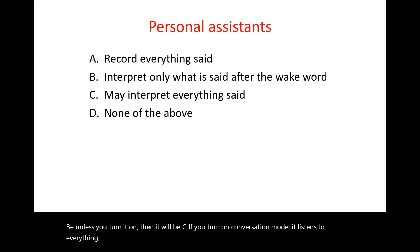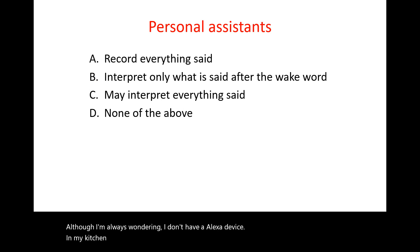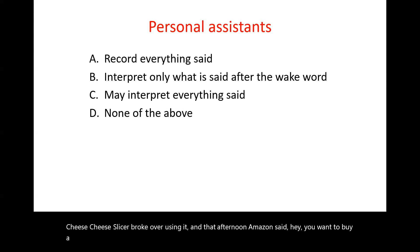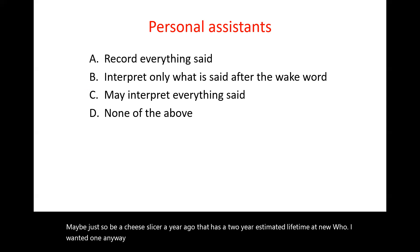Although I'm always wondering. I don't have an Alexa device in my kitchen, but the other day our cheese slicer broke while we were using it, and that same afternoon Amazon sent me a recommendation to buy a cheese slicer. How did they know? Maybe they calculated that the cheese slicer they sold me a year ago had an estimated two-year lifetime. Anyway, that was interesting.